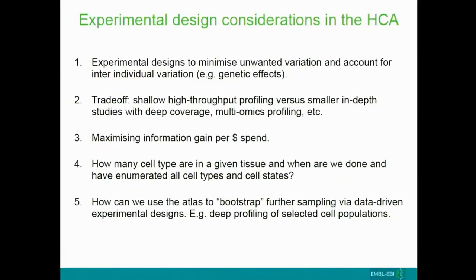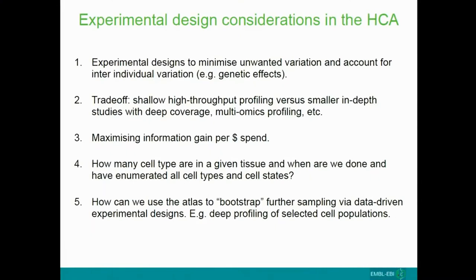Here are a few considerations for the HCA. The first key point is we need designs that allow for accounting for different variation we do not care about - I'm talking about inter-individual variation - understanding how the differences between people affect how robust the inferences we're going to make in the HCA are, and how robustly we identify cell types and cell states that really are observed not in one human but generalizing across the human population, which is a very important aspect.